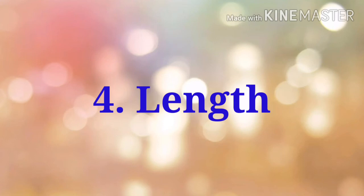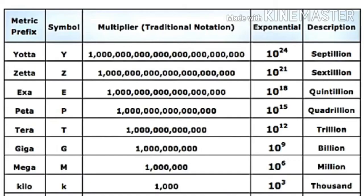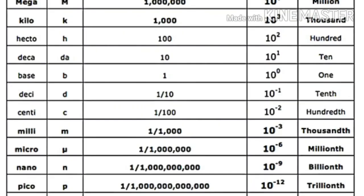Now let us find out the length. In the category of length: 10 millimeters equals 1 centimeter, 100 centimeters equals 1 meter, and 1000 meters equals 1 kilometer. Through this table, we can easily find out how many zeros are in each prefix. Mega means 10 to the power 6, also called a million — that is six zeros after one. Kilo means three zeros after one, also called a thousand.